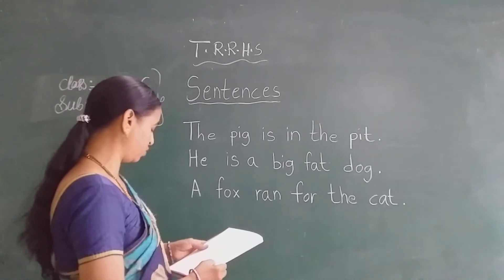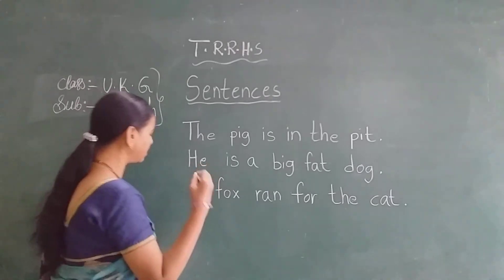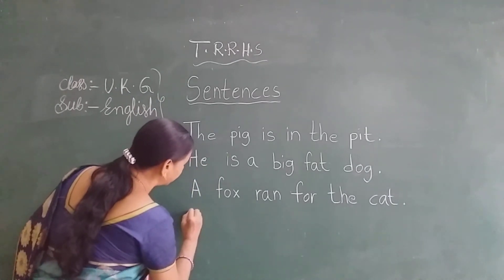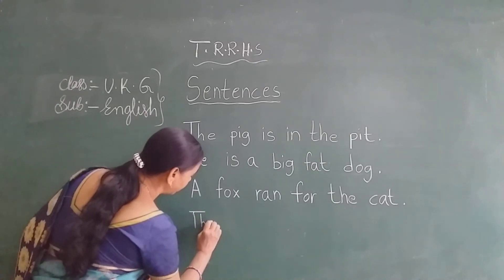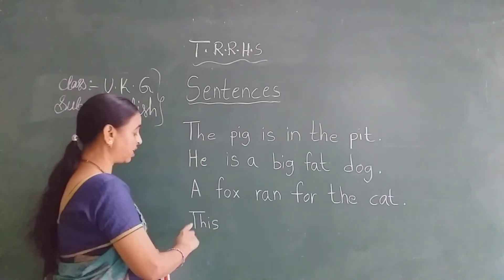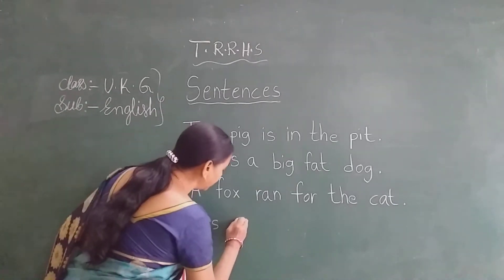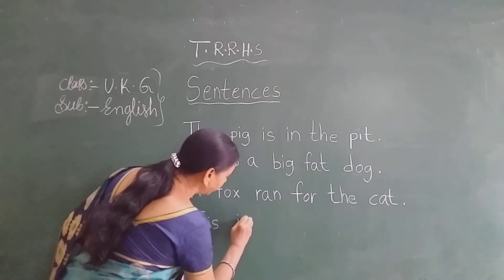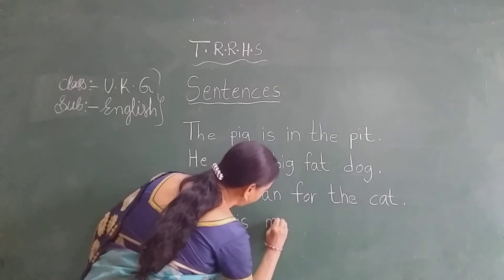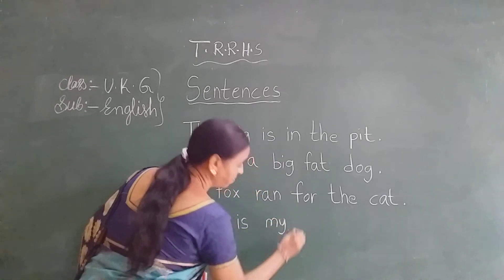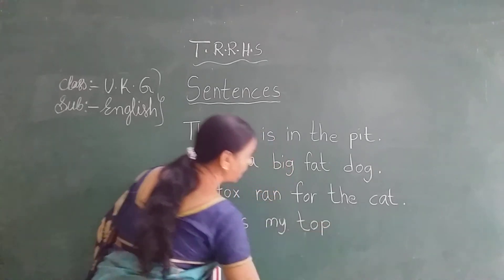Now next sentence: This is my top. This is my top. This. T-H-I-S. This. First letter is the capital letter. T-H-I-S. Is. I-S. Is. My. M-Y. My. Top. T-O-P. Top. This is my top.